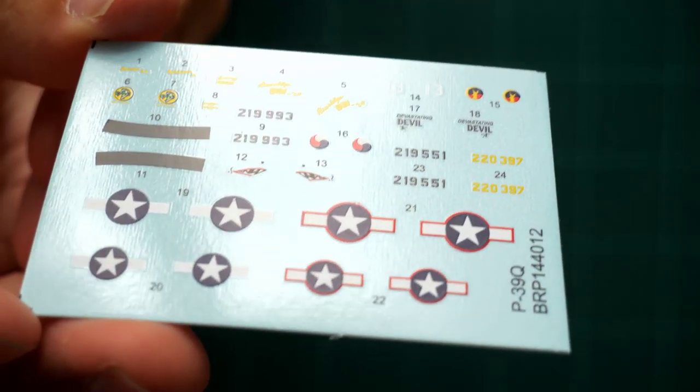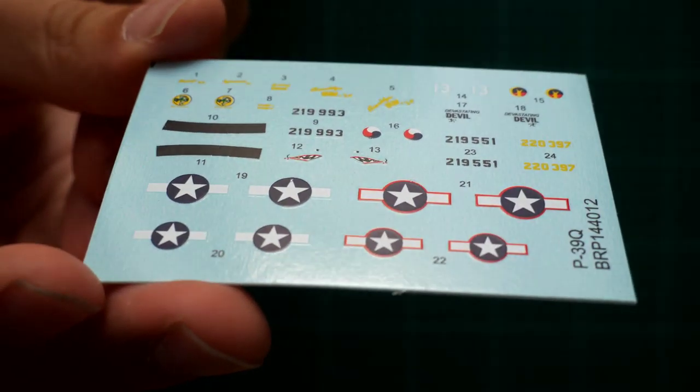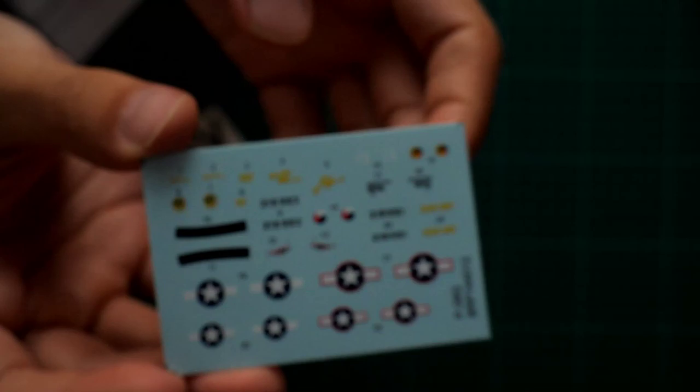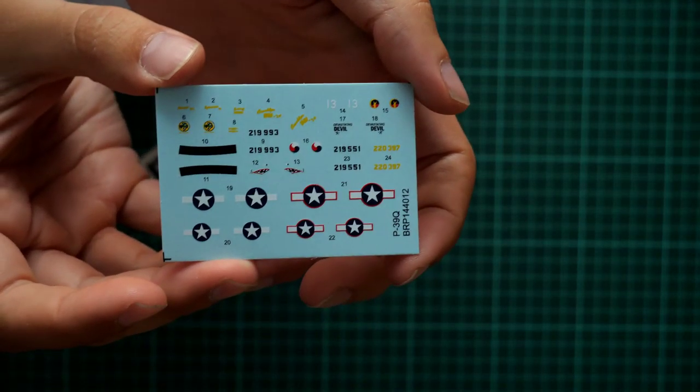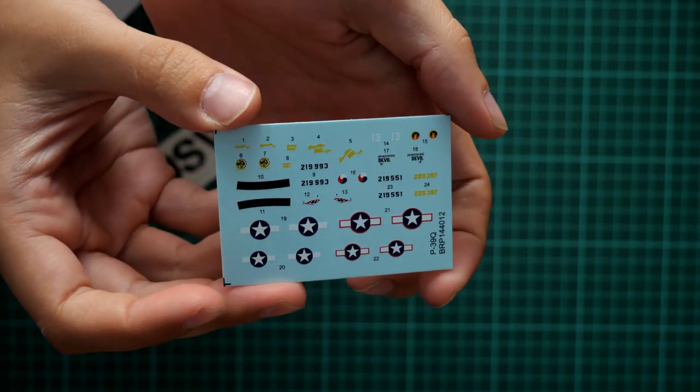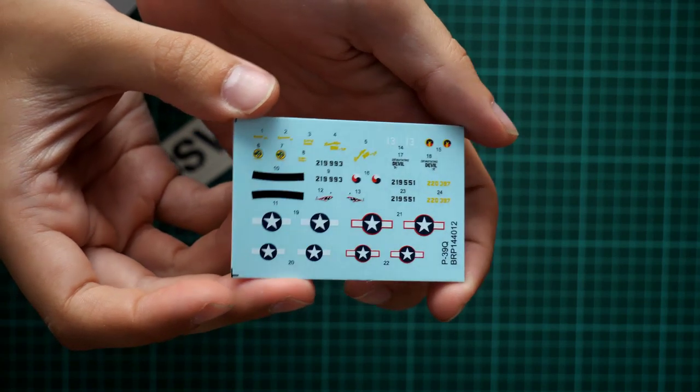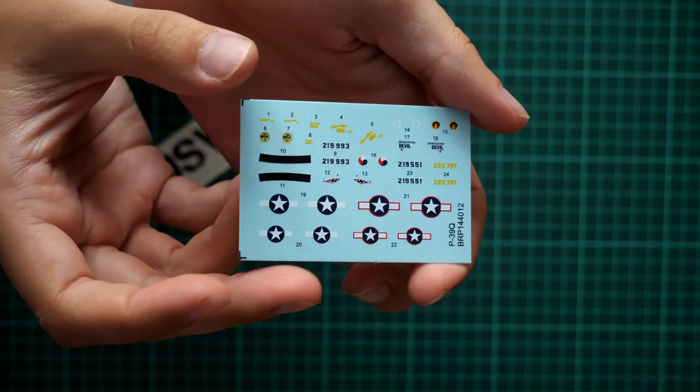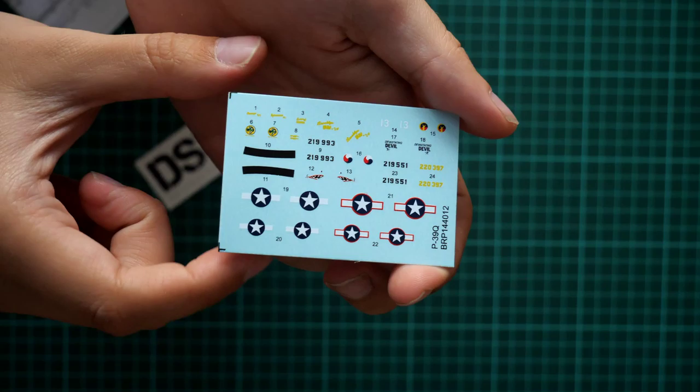And as far as you can see, there are no decals for the cockpit, so you won't be able to copy even the instrument panel. I mean, if you would like to have some dials on your instrument panel, you will have to copy it with a thin brush or something else, something similar.